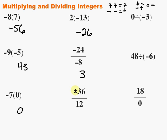How about this one? Negative 36 divided by 12. That would be 3. Then, we've got a negative and a positive. What's the sign? Negative.